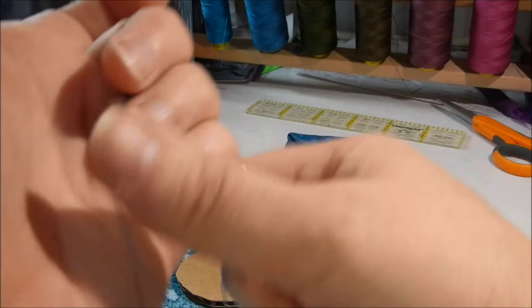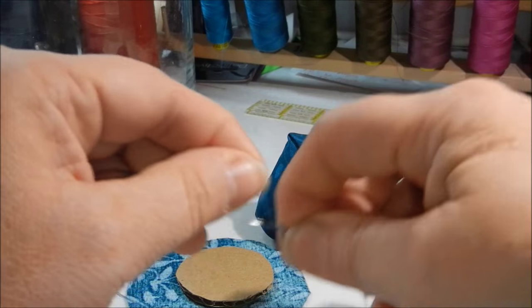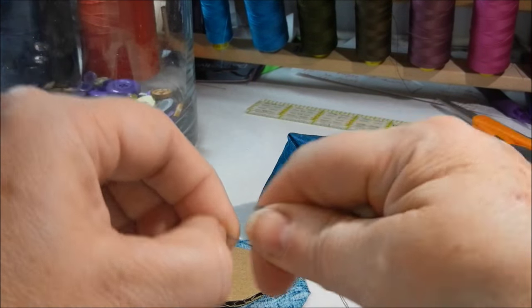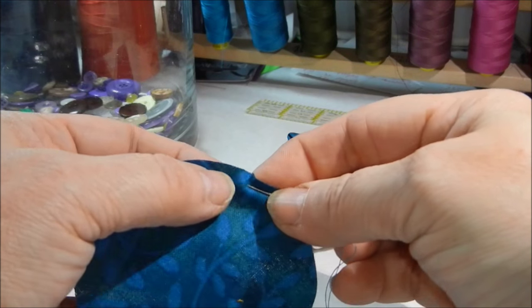So now I'm going to work on the base of the owl. Again, I'm going to double my thread, give it a knot, and I'm going to gather up my circle the same way I gathered up the base of the owl. So I just want a quarter of an inch from the edge all the way around.